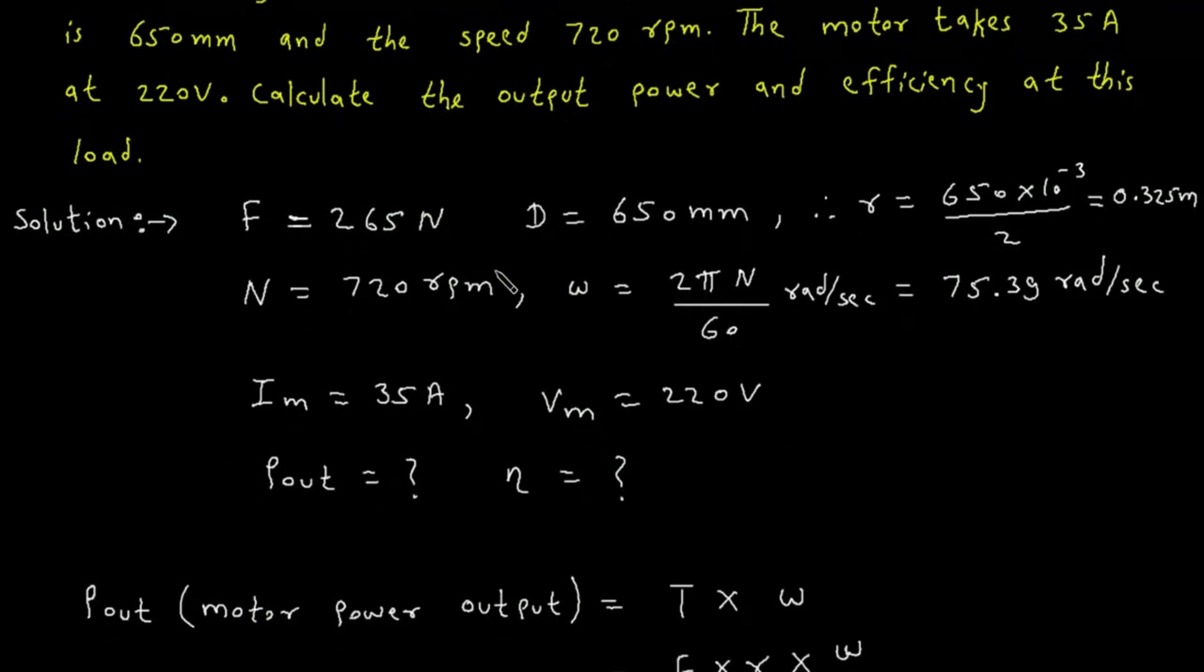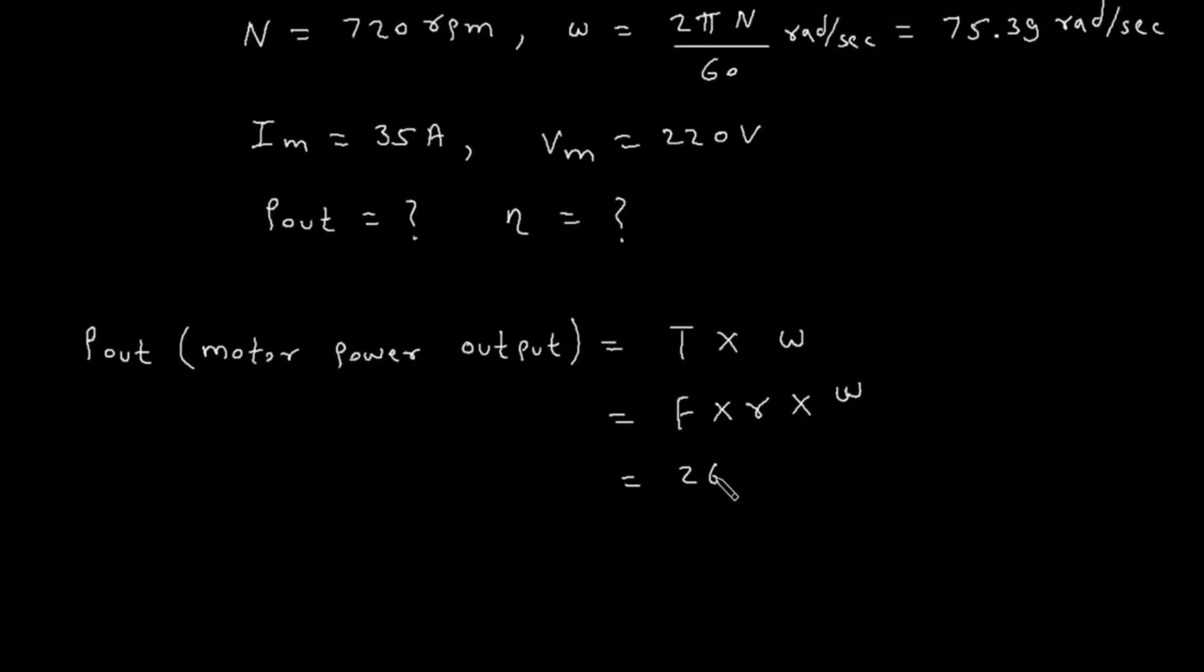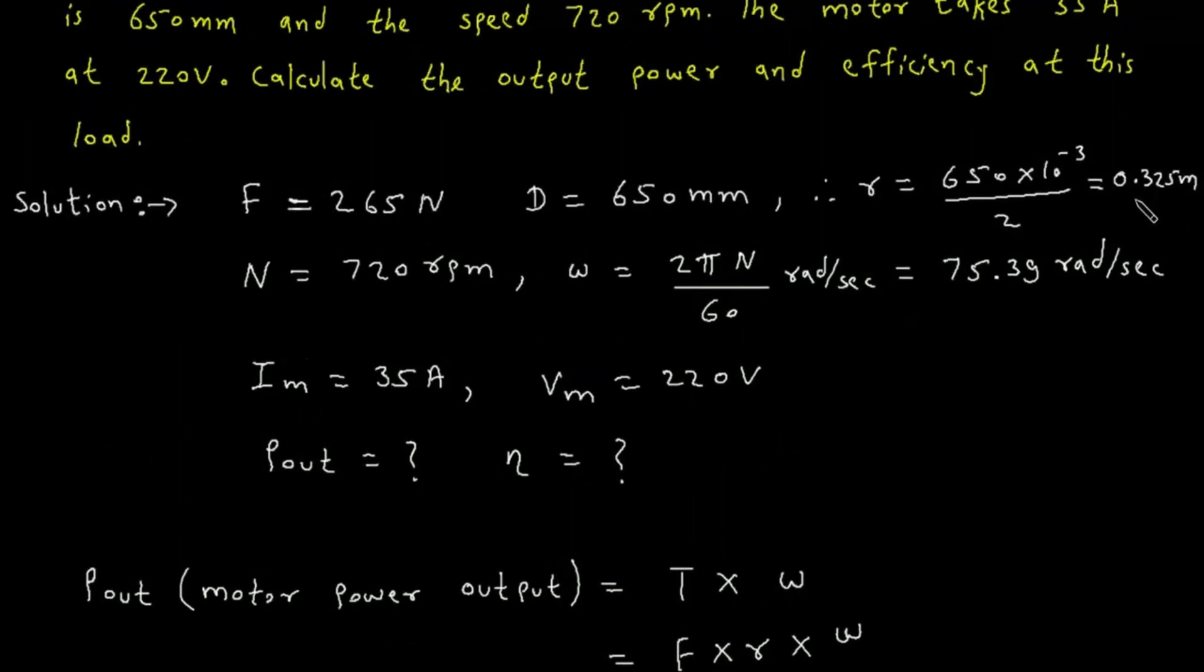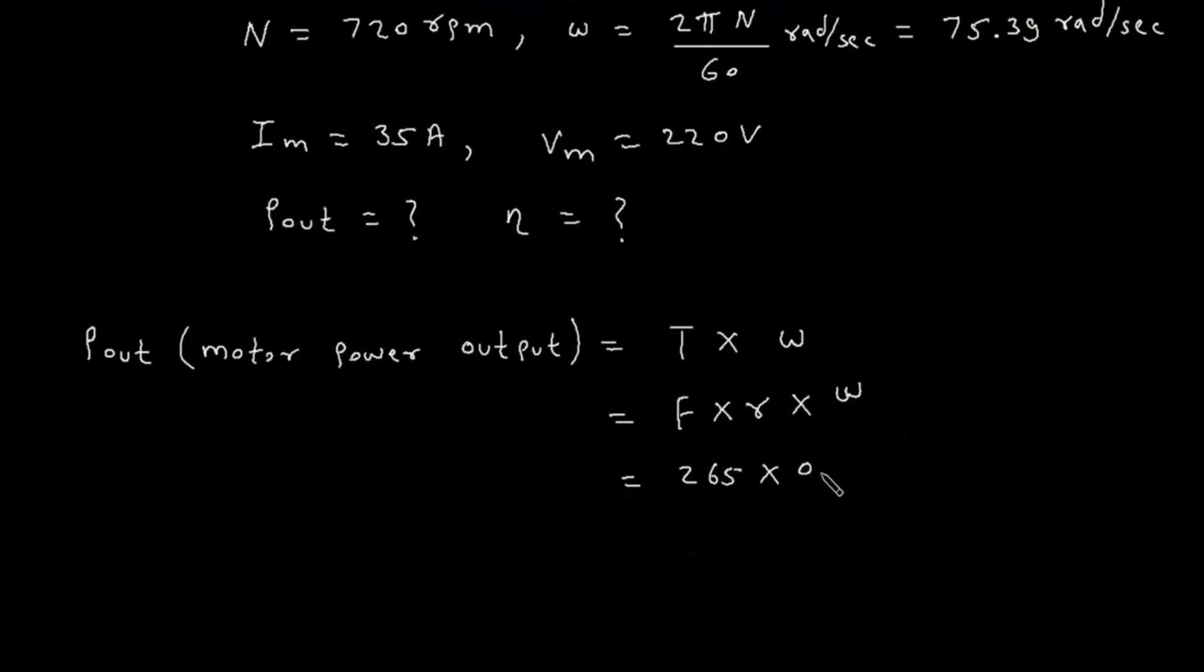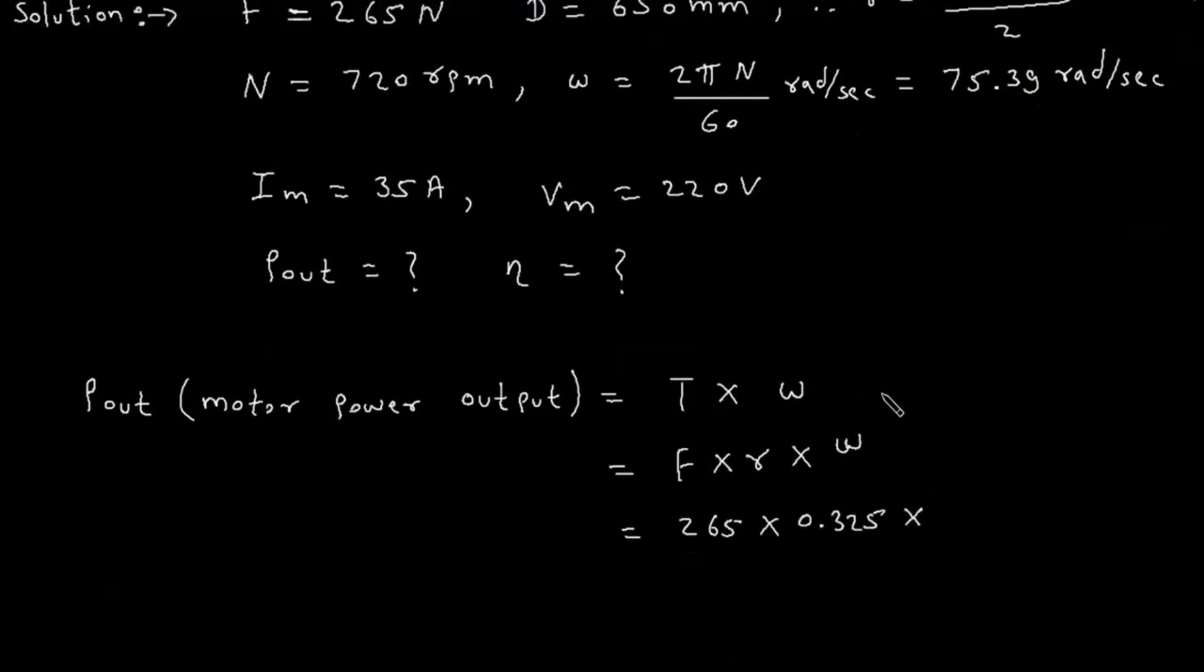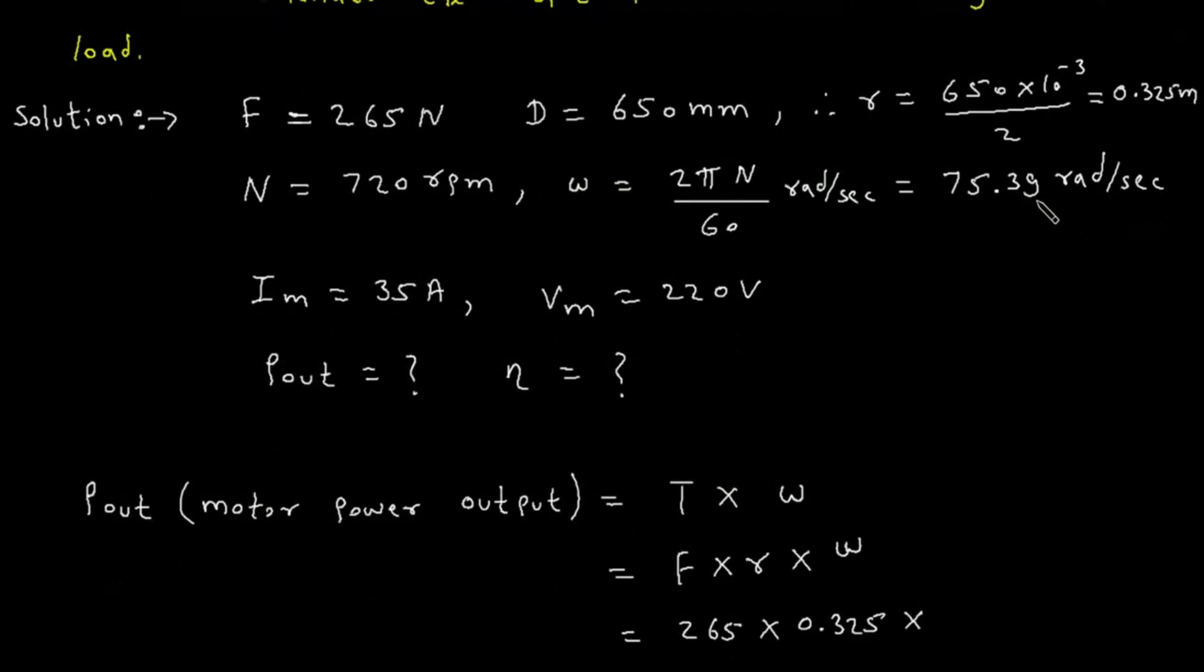The formula for torque is force times radius times omega. We know the force is 265N, radius is 0.325m, and angular speed is 75.39.